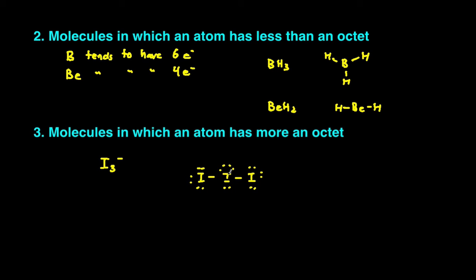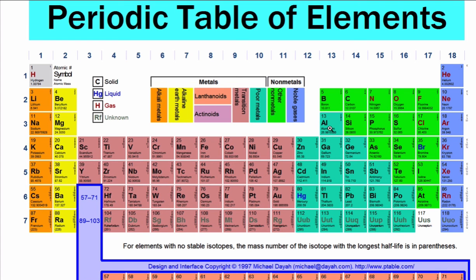And the reason why iodine is capable of doing so, or any of the elements that's in the third row or lower is capable of doing so, is because starting at the third energy level, there are d orbitals available. And those d orbitals can accommodate the extra electrons.